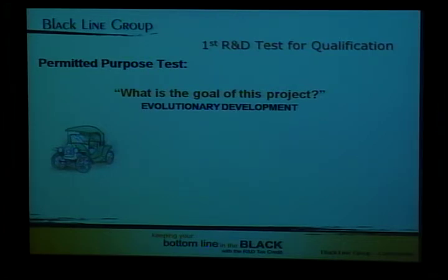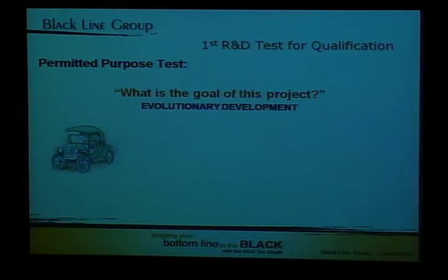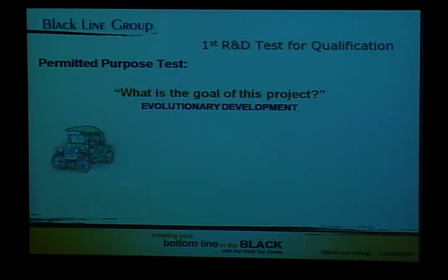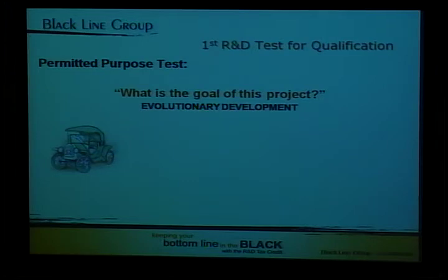The first test is what's called the permitted purpose test. This simply says that you have to have a goal — at a high level, to develop and/or improve a product or process, enhance quality, reliability, functionality, or reduce cost. This is usually a pretty easy goal for most manufacturers to meet, because if they're not doing these things, they won't be in business very long. What's important to keep in mind is that we are looking for evolutionary development. We're not looking for anything revolutionary. It doesn't have to be something brand new to the world, never been seen before, in order to qualify for the R&D tax credit.